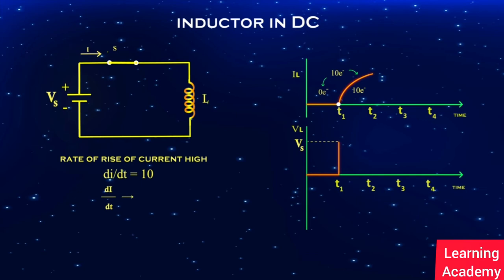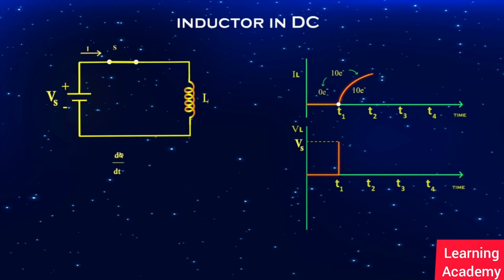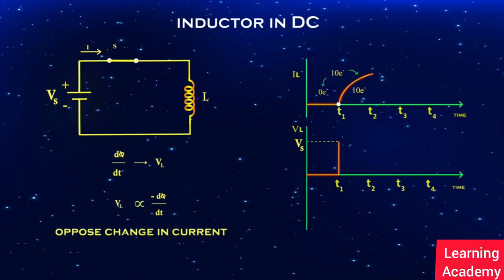A high change in current will cause high change in flux, because the rate of change in flux is proportional to rate of change in current. This change in flux linkage will induce an EMF across the inductor, because the induced voltage is proportional to the rate of change in flux. The negative sign indicates that the EMF induced will oppose further change in current. This is also called back EMF.